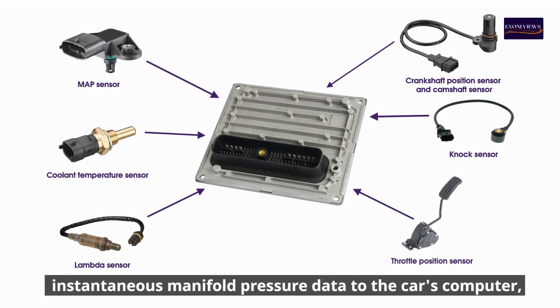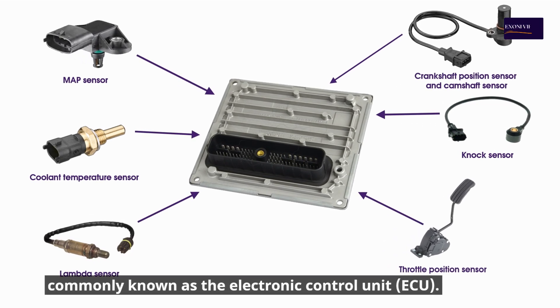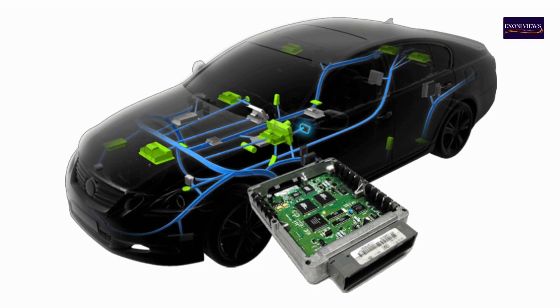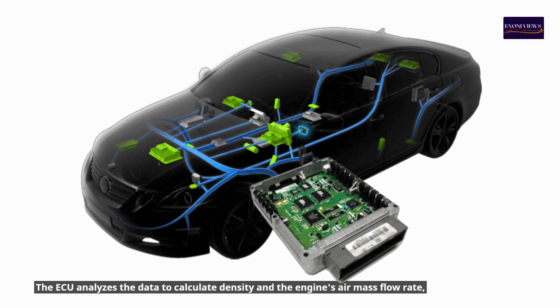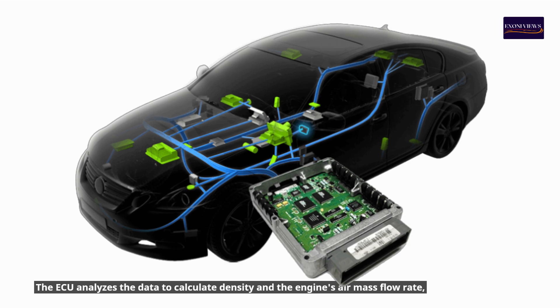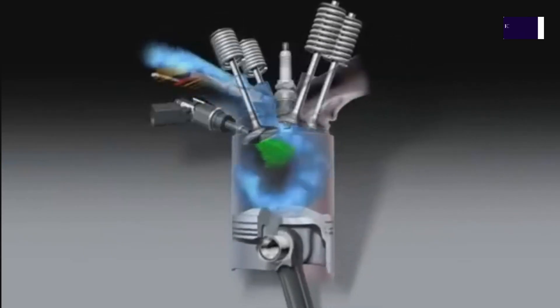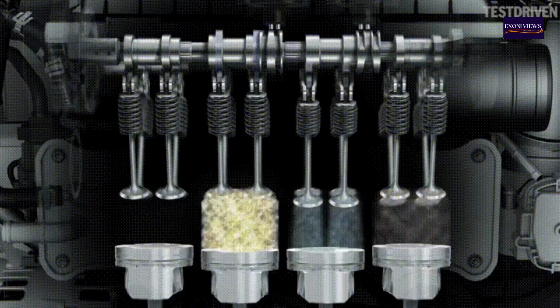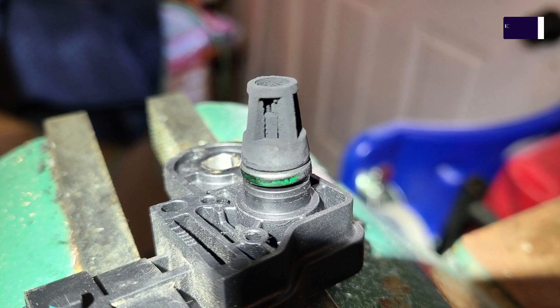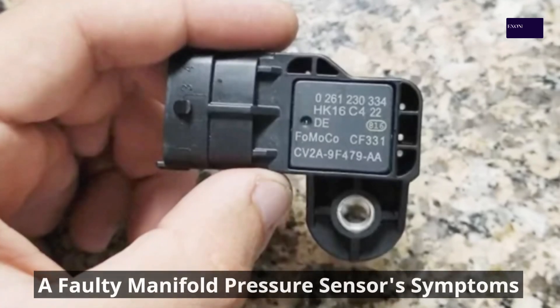The computer, commonly known as the Electronic Control Unit (ECU), analyzes the data to calculate air density and the engine's air mass flow rate, which aids the computer in determining the amount of fuel required for optimal combustion. A defective manifold air pressure sensor can cause a variety of engine difficulties.